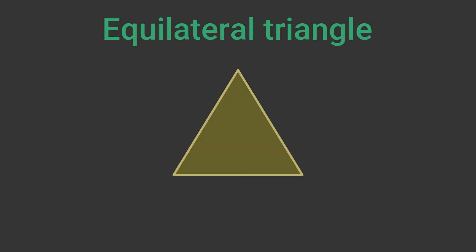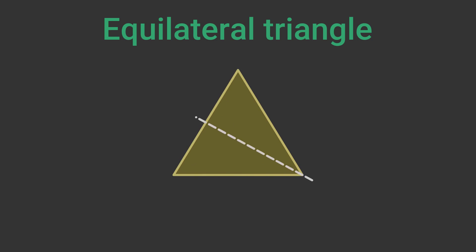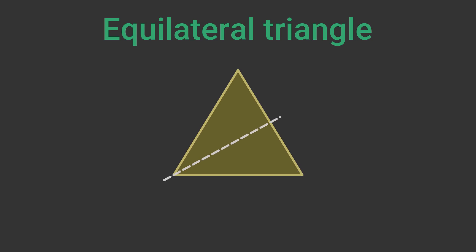Some shapes have more than one line of symmetry. For example, an equilateral triangle has a line of symmetry from the top vertex to the centre of the base, just like an isosceles triangle. It also has lines of symmetry from the other two vertices to the opposite sides. This makes three lines of symmetry.